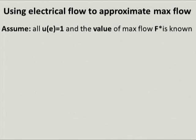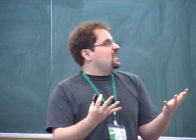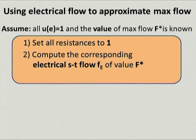To discuss this, let me simplify further: assume all capacities equal one, we know the value of the maximum flow F*, and our graph is sparse and undirected. Given these assumptions, how could you use electrical flows to approximate maximum flow? The first thing you might think is: take your graph, set all resistances to one, compute the corresponding electrical ST flow of the prescribed value, and hope this is a good approximation.